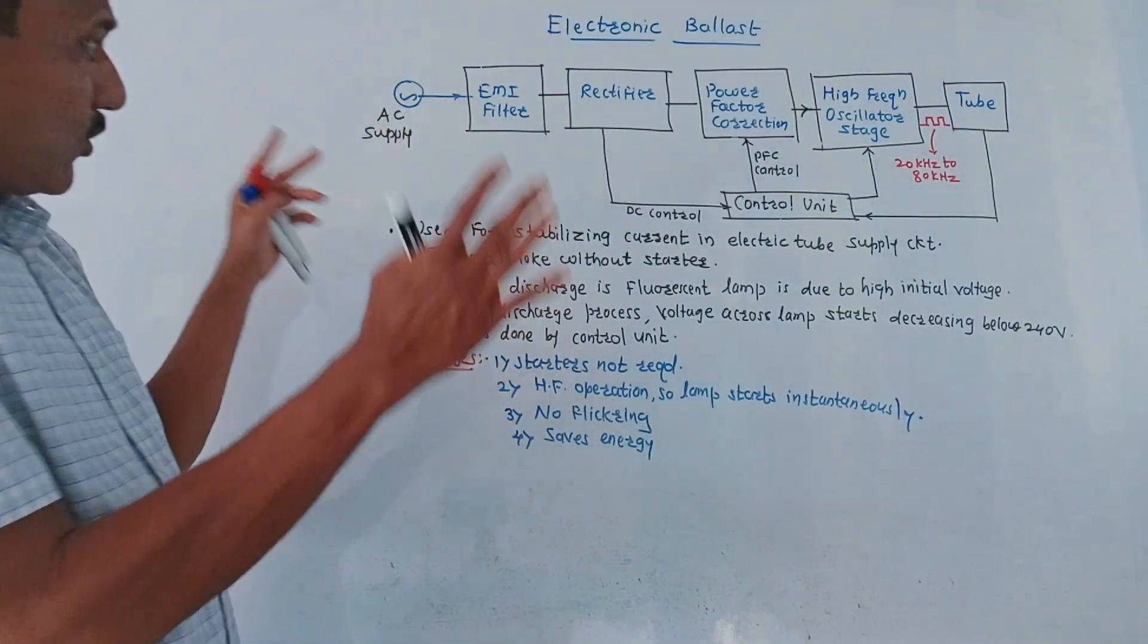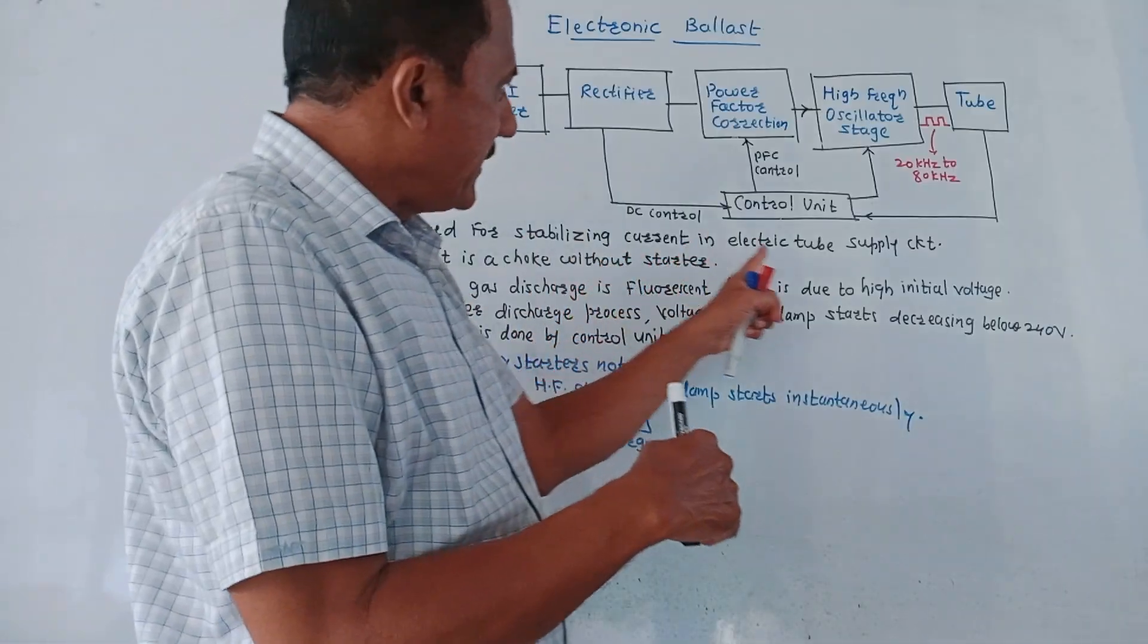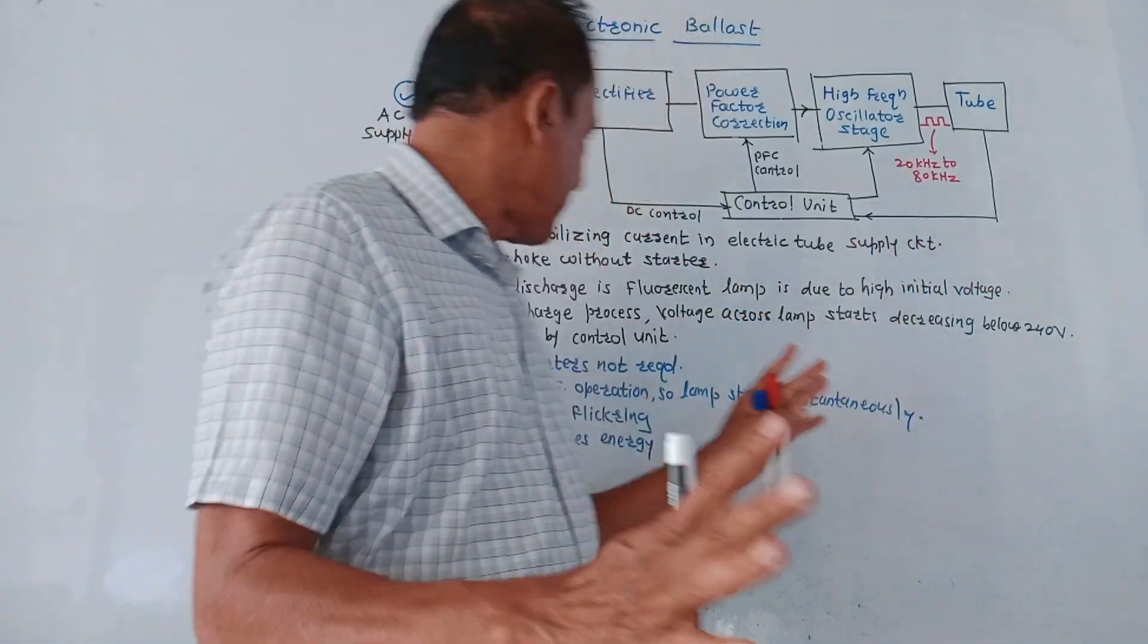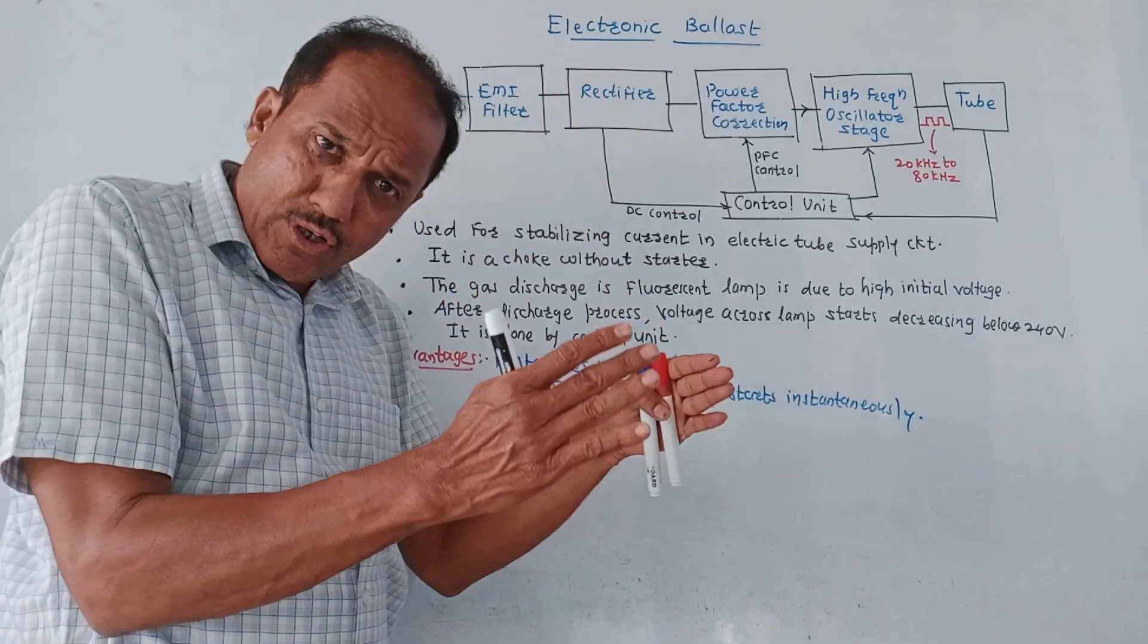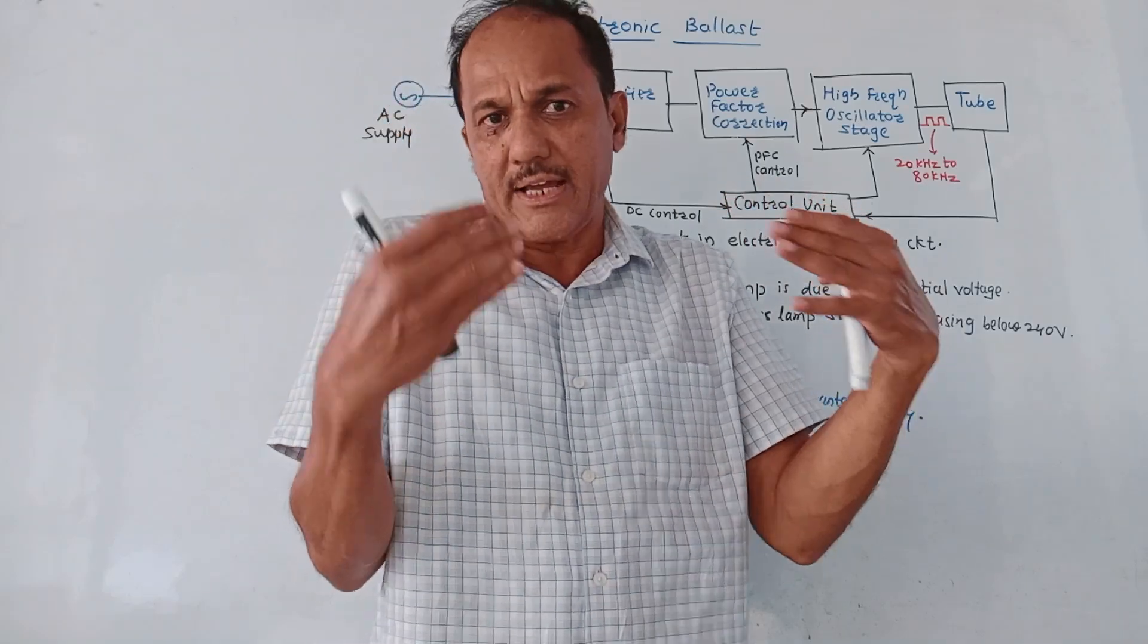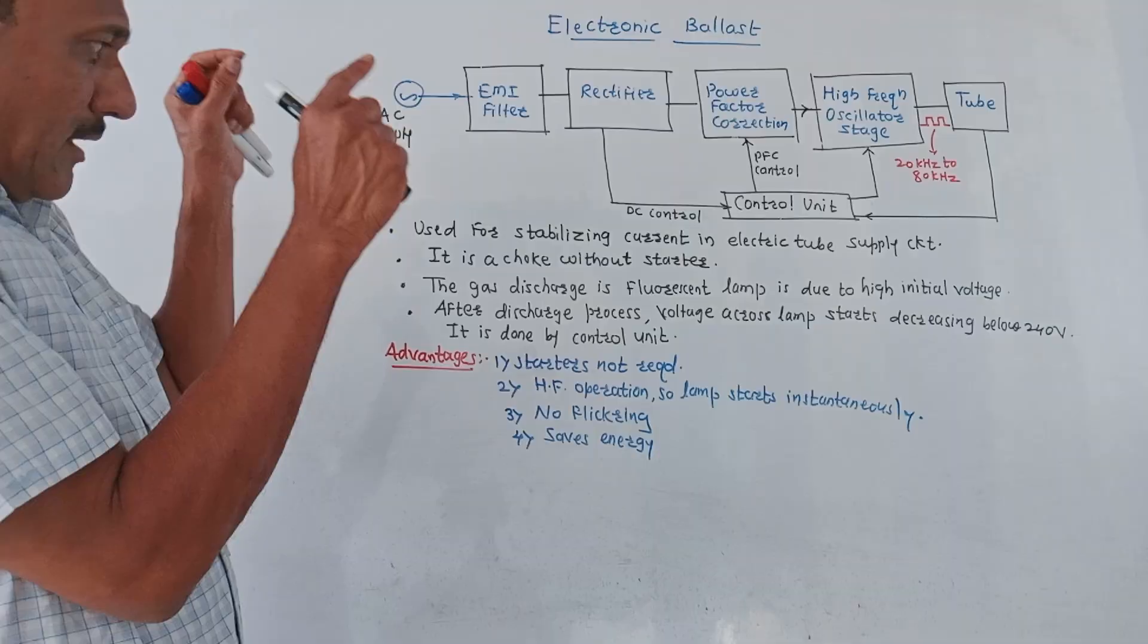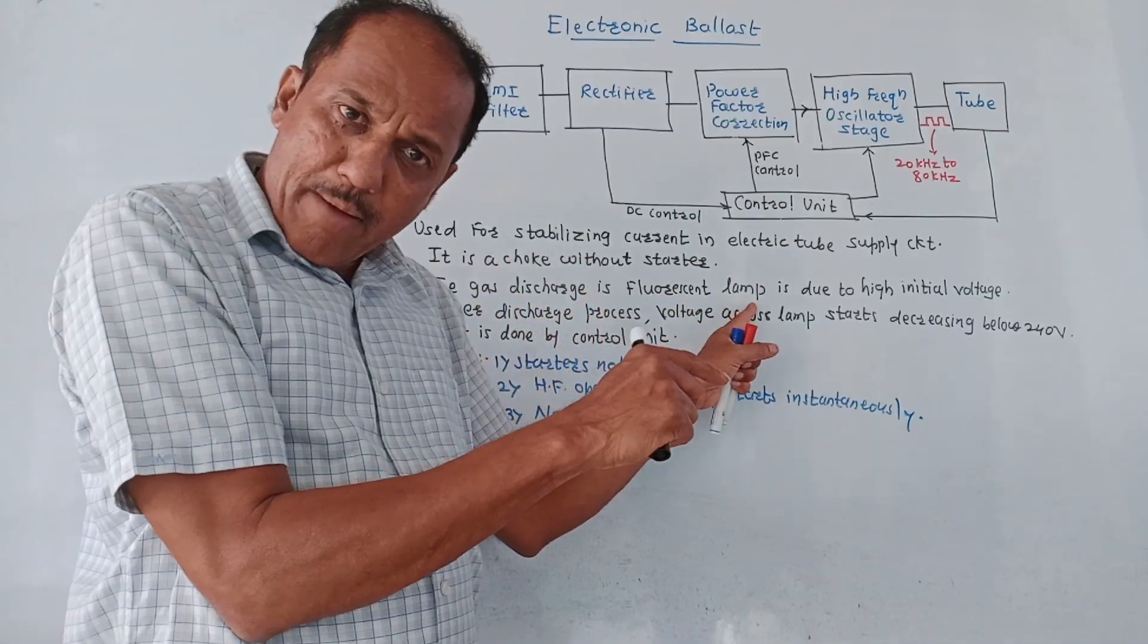Now basically, this electronic ballast is used for stabilizing current in the electric tube supply circuit. It can be considered as a choke without a starter. In case of normal electric choke, it has a starter, but this is a choke without a starter. The gas discharge in the fluorescent lamp...